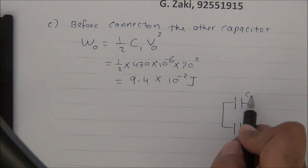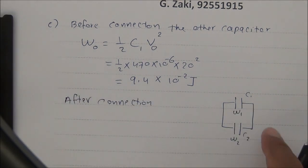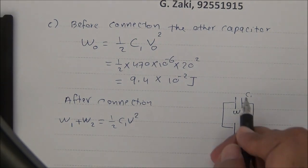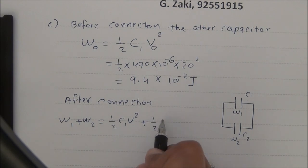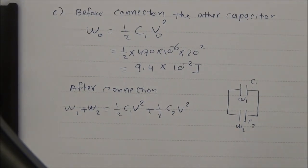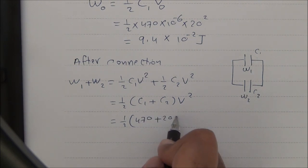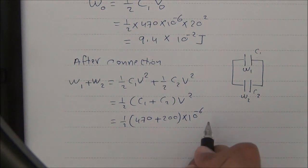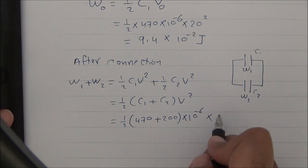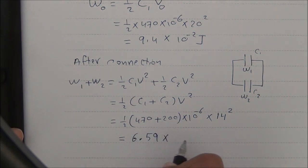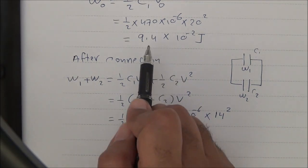After connection, the total energy is W1 + W2 = ½·C1·V² + ½·C2·V² = ½·(C1 + C2)·V² = ½ × 670 × 10⁻⁶ × 14² = 6.59 × 10⁻² joules.